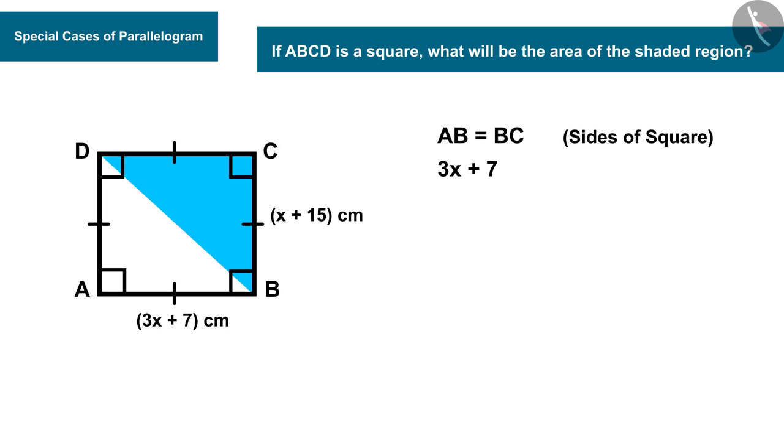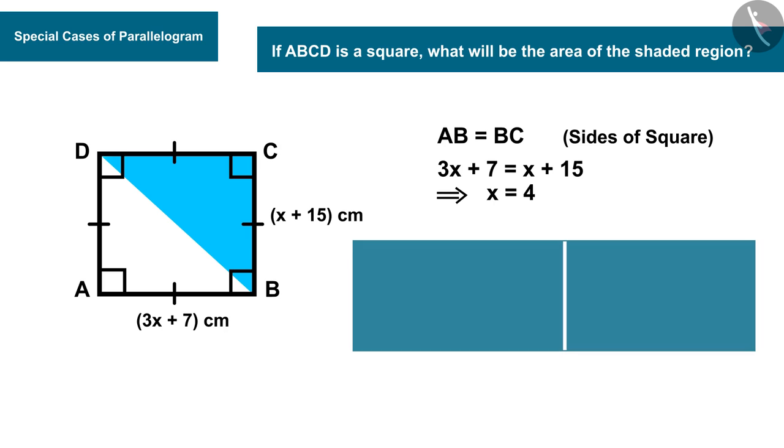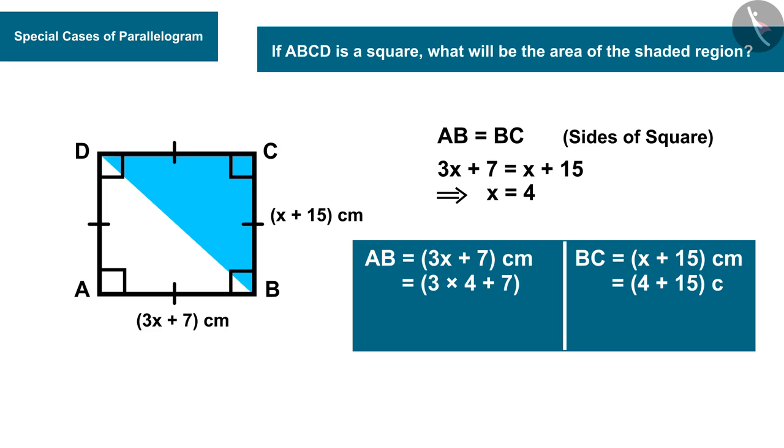That gives us a linear equation in one variable which on further solving we get the value of x as 4. By substituting the value of x in given values of sides AB and BC, we find the correct measurement of the sides which is 19 centimeters, and since it is a square each arm measures 19 centimeters.